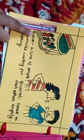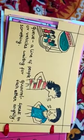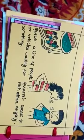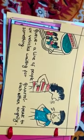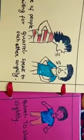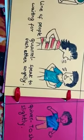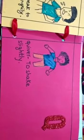Our next alphabet is Q. The first word from Q is queue. Queue means a line of people or vehicles waiting for something. Here the people are waiting outside the cinema hall for the tickets. The second word is quarrel, that is to speak to each other very angrily and fight. The third word is quiver, to shake slightly.